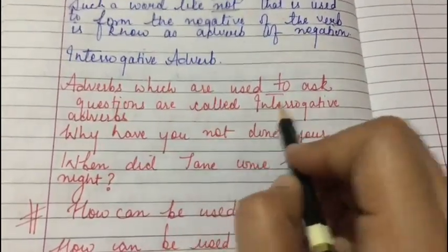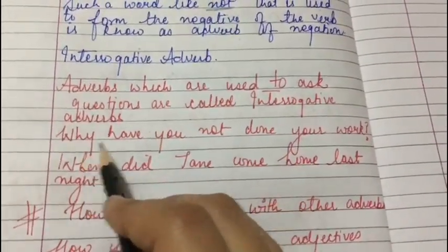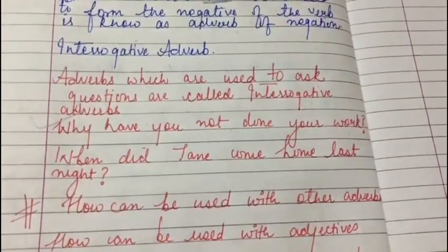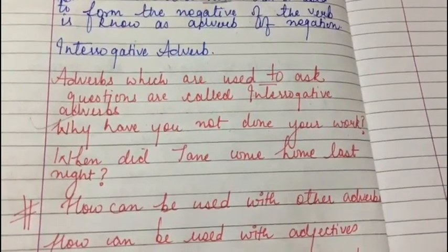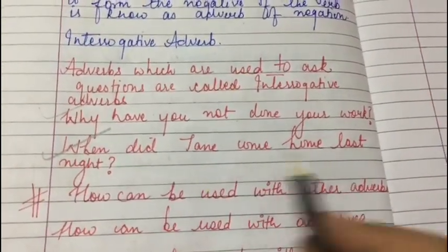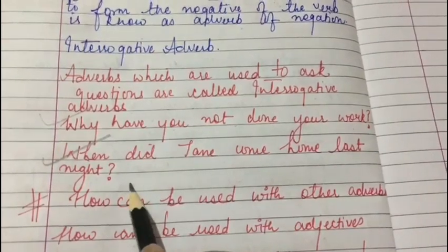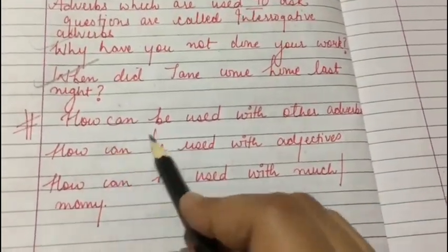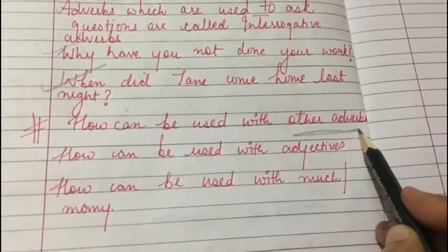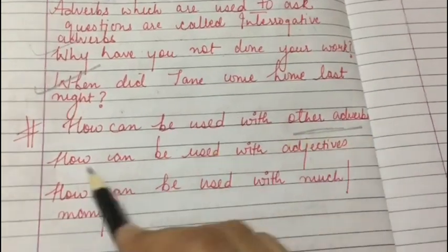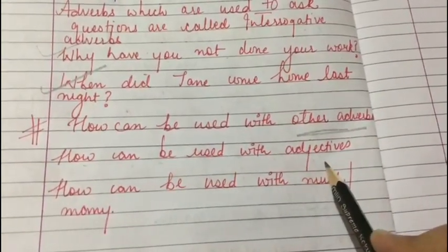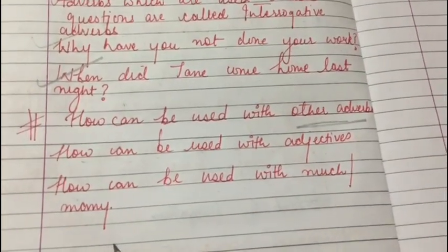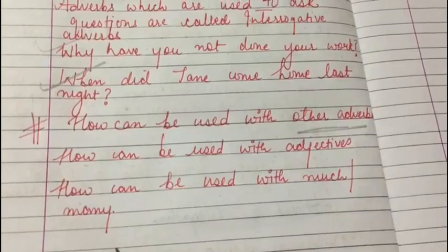The last kind is interrogative adverbs. Adverbs which are used to ask questions are called interrogative adverbs. For example, 'Why have you not done your work?' — here 'why' means for what reason, so it is an adverb of cause or reason. 'When did Jane come home last night?' — here 'when' means at what time, acting like an adverb of time. Also note that 'how' can be used with other adverbs — 'how well did Govinda sing,' 'how soon can you finish the work' — with adjectives like 'how tall is that building,' and with 'much' or 'many' like 'how much sugar have you put in the tea' or 'how many books have you read this month.'